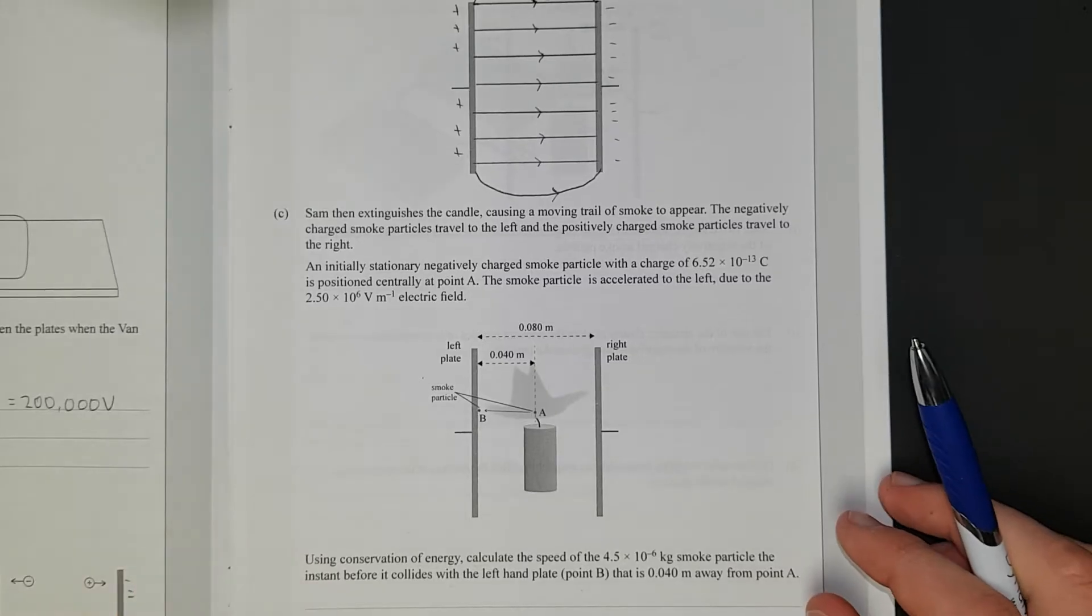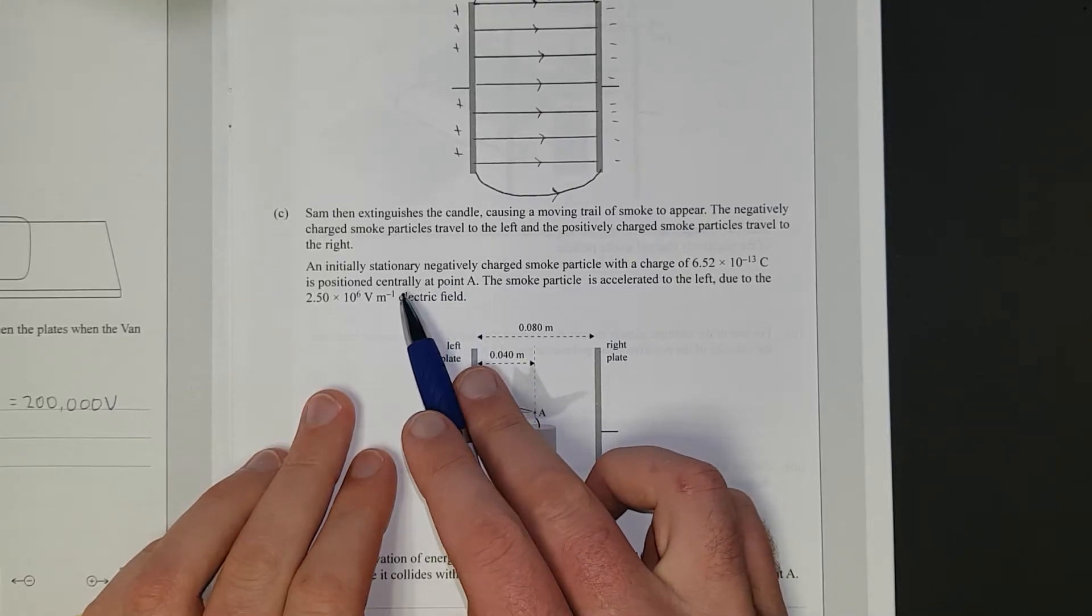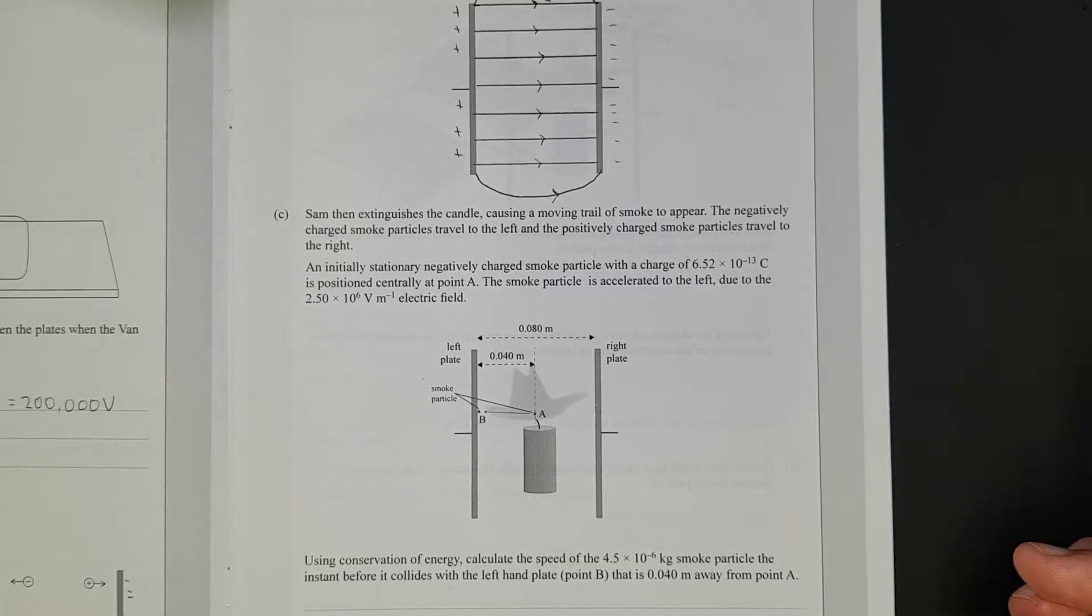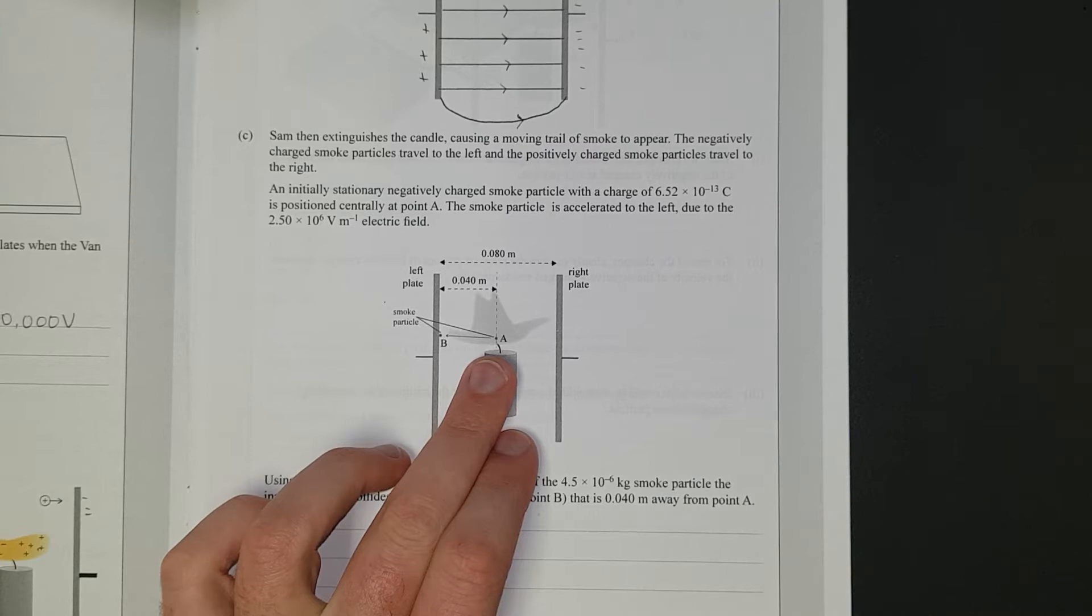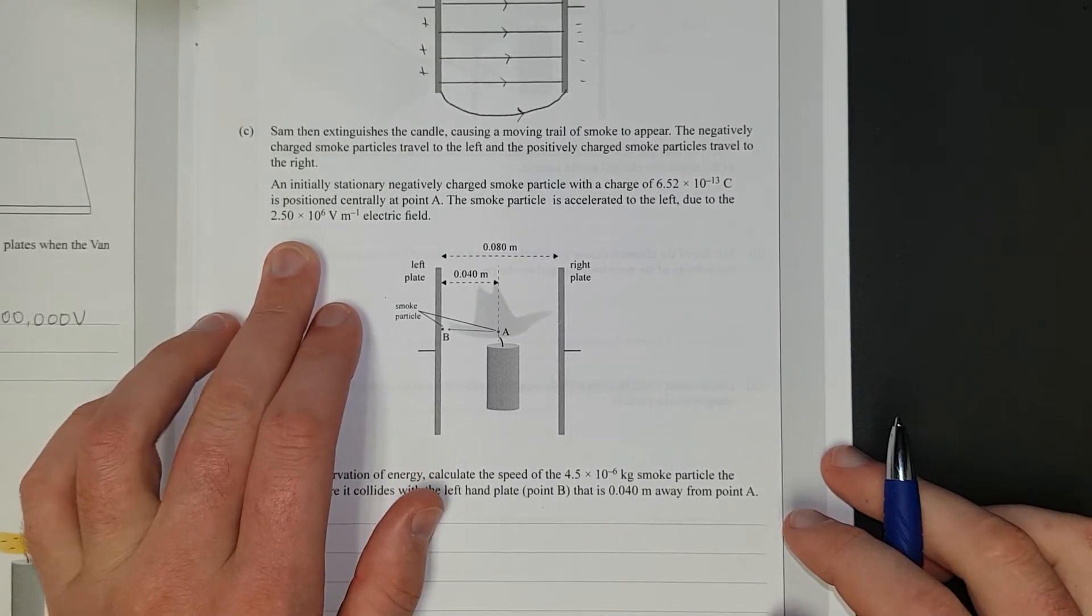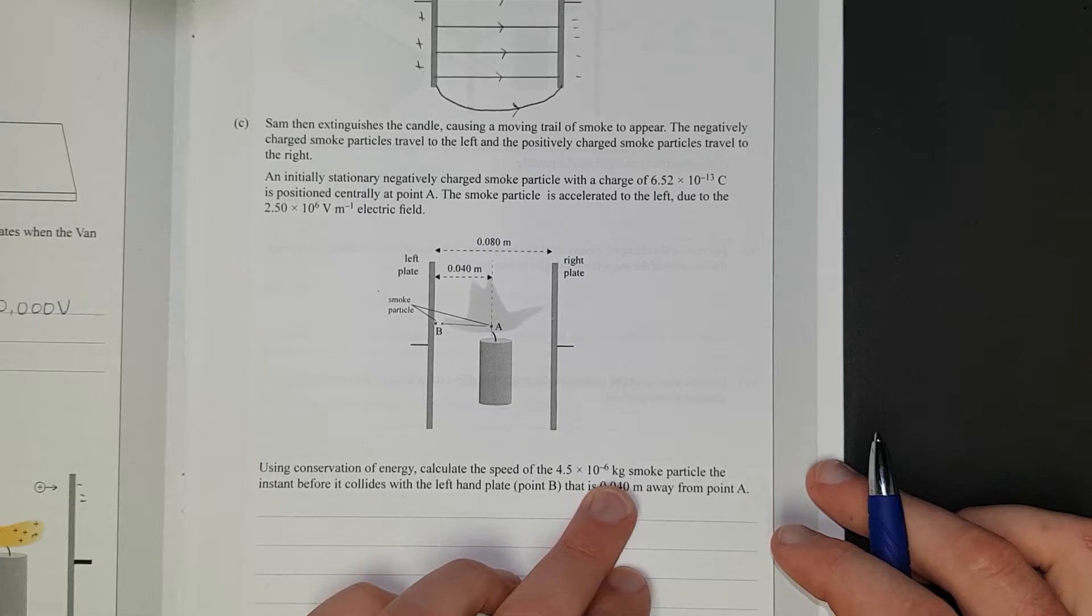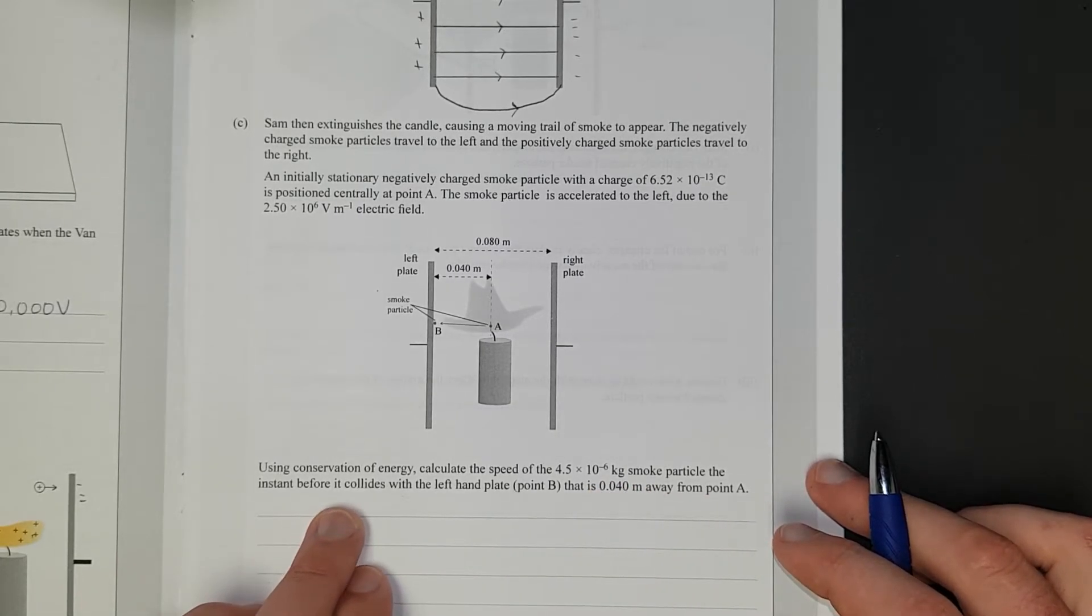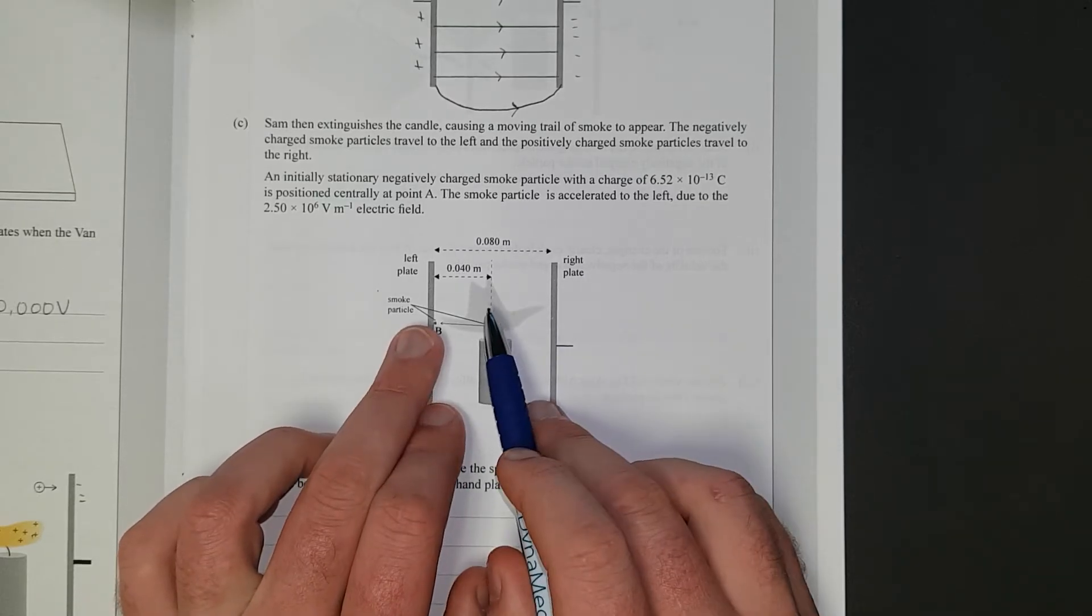Right, what else have we got? Sam then extinguishes the candle, causing a smoke trail to appear. The negatively charged smoke particles travel to the left, positively charged go to the right. Initially, an initially stationary negative charged smoke particle, with a charge of 6.52 to negative 13 coulombs, is positioned at A. So, it's right about there. Can we see that? Sweet. It's then accelerated to the left, so it goes that way, due to the electric field, which we were given on the other side of the page.